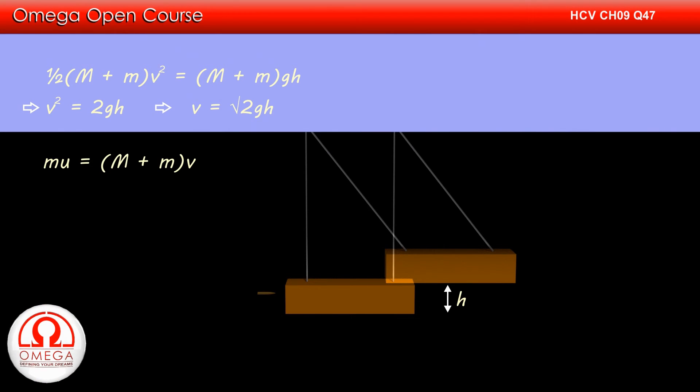As per the law of conservation of momentum, the initial momentum of the bullet must be equal to the momentum of the pendulum system just after the collision, or mu = (M + m)V.